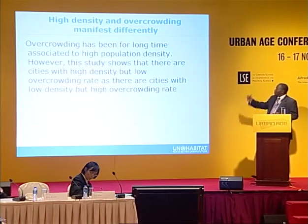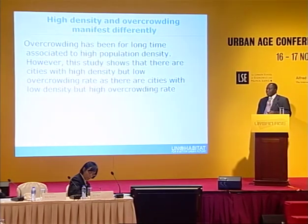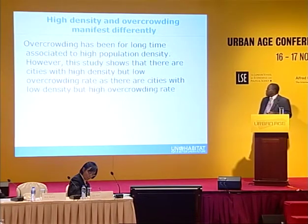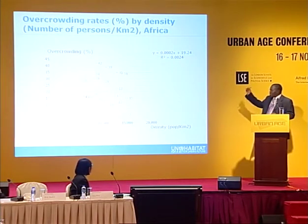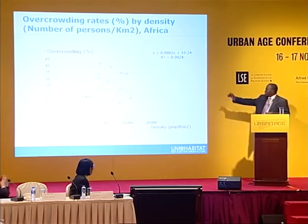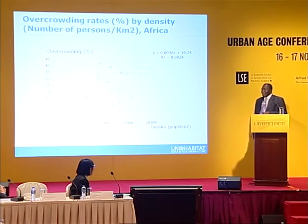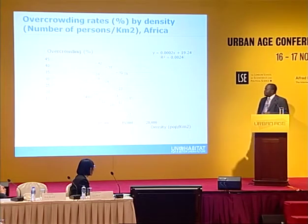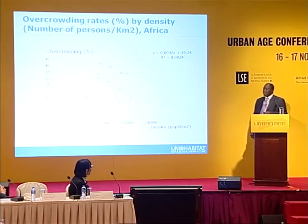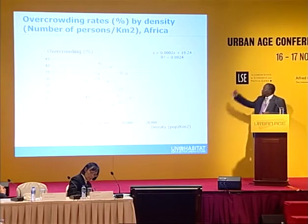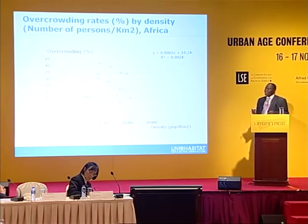Overcrowding has long been associated with high population density, but my presentation shows there is no direct relationship between density and overcrowding. For Africa, the highest density was in Alexandria, where the estimated overcrowding is only 2%. But if you look at Madagascar, the overcrowding is 42%, and it has a density of less than 10,000 per habitat. It is very clear that there is no relationship — there are other factors.